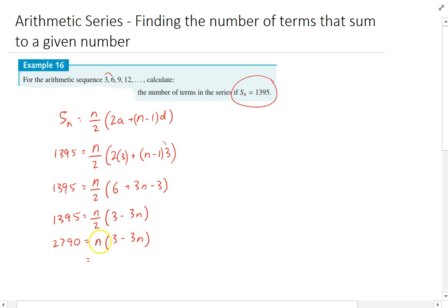And then I can expand this, so I'll get 3n minus 3n squared equals 2790. Look familiar to you? Because if I move everything to one side, I'll have 3n squared minus 3n plus 2790 equals 0, and what I have now is a quadratic and I need to solve that quadratic to find out what n is.